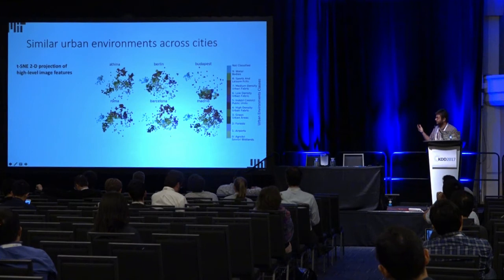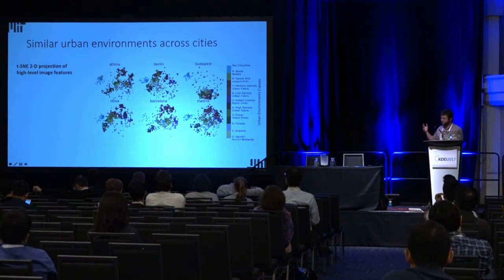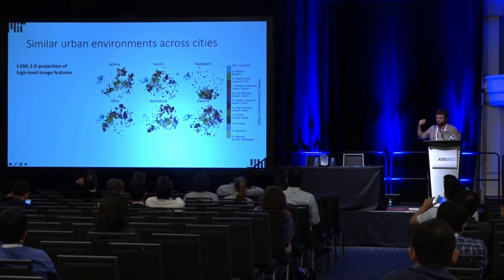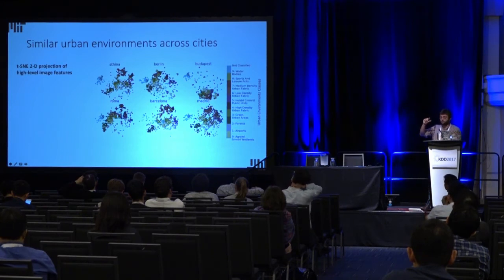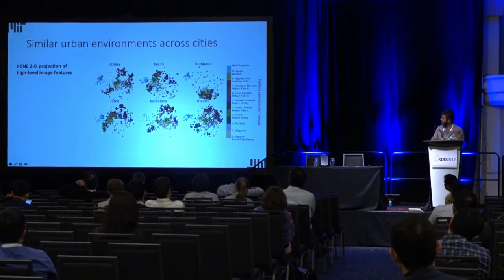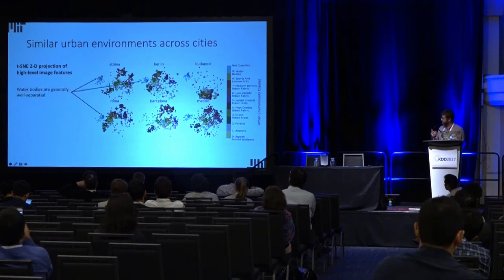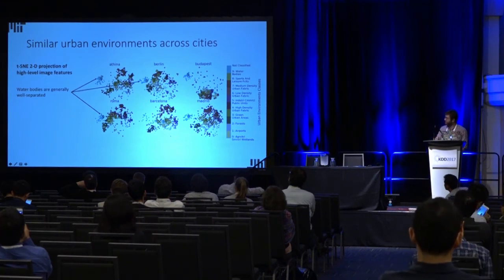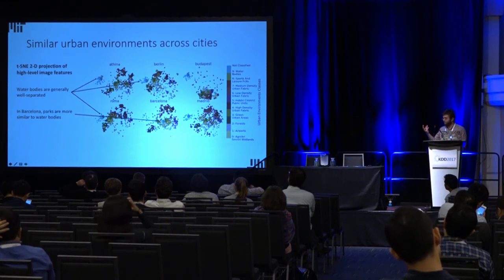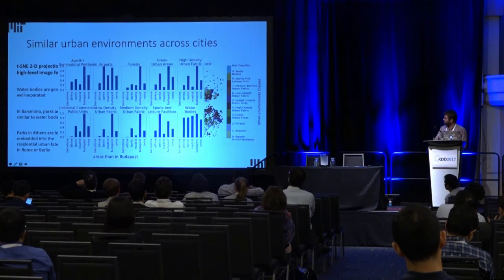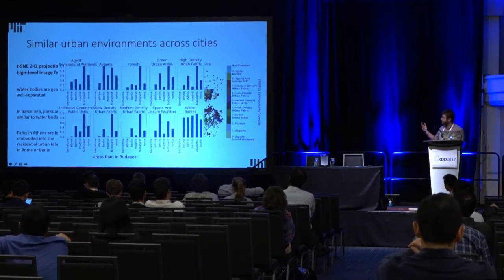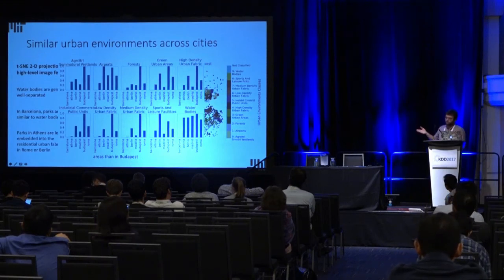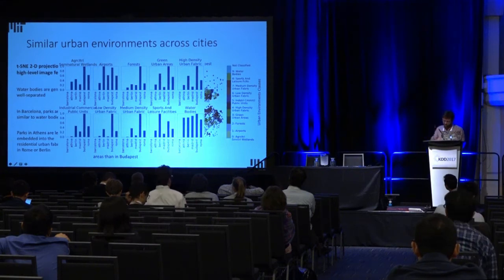Now that we have a trained model, let's use it for qualitative analysis. We did a t-SNE projection — a low-dimensional embedding — of a number of urban environments. Each dot represents a 250 by 250 meter location in different cities, colored by land use class. Water bodies are essentially well separated. For Barcelona, water bodies are embedded within parks, suggesting they're more similar. You can read these charts as a tool for comparing cities — for example, what's the distance between parks in Barcelona and parks in Madrid, and are Madrid's parks more similar to Barcelona's than to Budapest's?